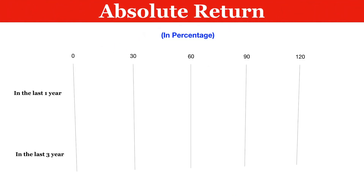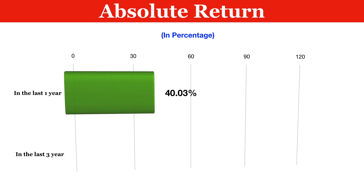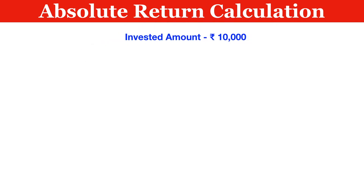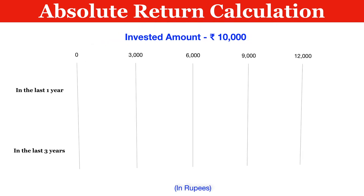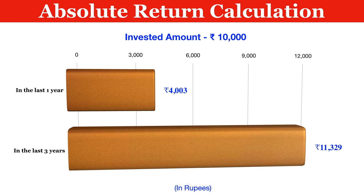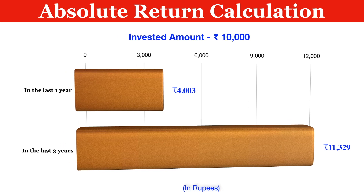Now we have come to the exciting part: the absolute return in percentage. In the last one year, this mutual fund has given a return of 40.03%. In the last three years, it would have given a return of 113.29%. To simplify, an investment of 10,000 rupees would have returned 4,003 rupees in one year, and 11,329 rupees over three years. All these calculations are in absolute numbers.